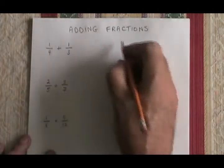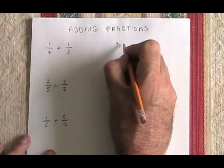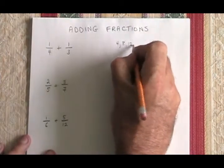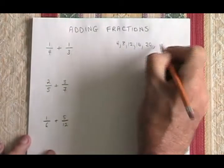Here we have a 4 and a 3, so I'm going to list their multiples. 4's multiples are 4, 8, 12, 16, 20, and it keeps going.